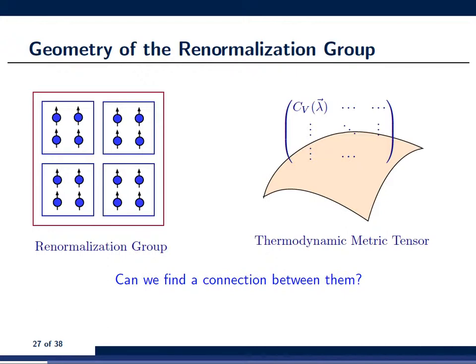On the other hand, we had this new thermodynamic metric tensor, where each component corresponds to a physical susceptibility. And clearly, this geometric object is also made to detect phase transitions. So, a natural question to ask is, can we actually find a connection between these concepts?